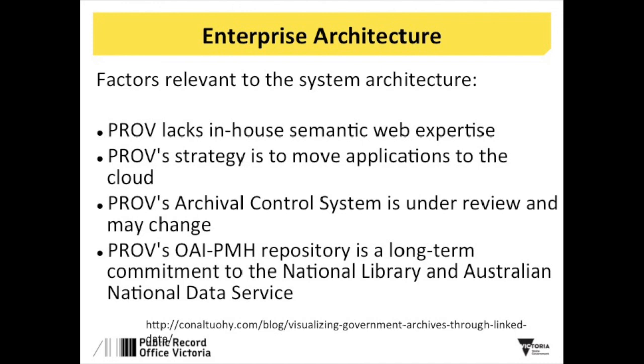The other point about relying on the OAI-PMH feed - by getting data from the public OAI-PMH feed rather than directly from the archival control system - is that the archival control system is potentially under review and things can change. If we had a dependency on that software and things changed, we'd have to change to match. But because the OAI-PMH repository is effectively a contract - a commitment that PROV has made to the National Library and the Australian National Data Service - if they're going to continue to offer that service, if they change their archival control software, they'll still need to provide that same service. So things can change behind the scenes but so long as that service is provided, we'll be insulated from any disruptive changes.